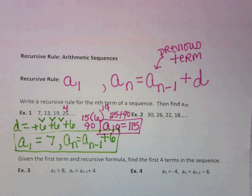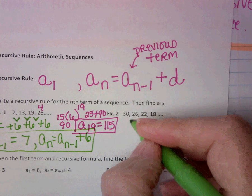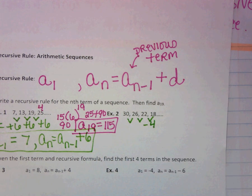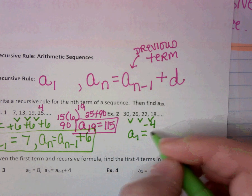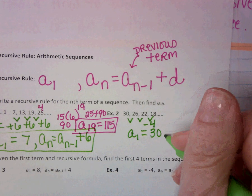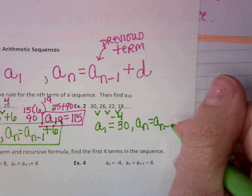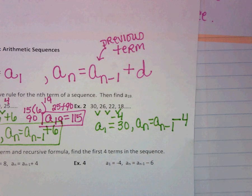Look at the next one. First thing we want to do is find the pattern. The pattern is that we are subtracting 4 every time. So we're going to state a sub 1 equals 30, and then we say a sub n equals a sub n minus 1 minus 4 this time.